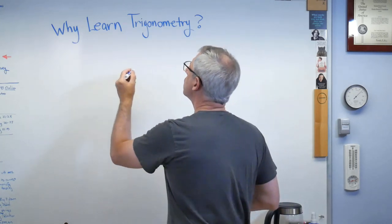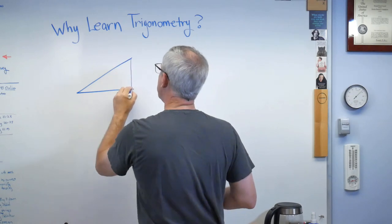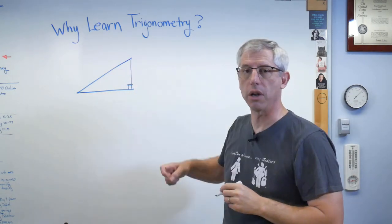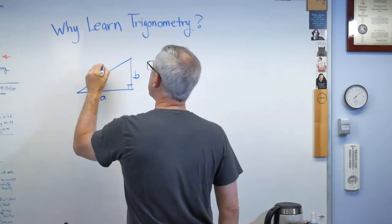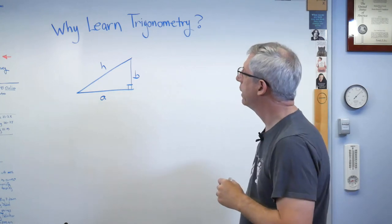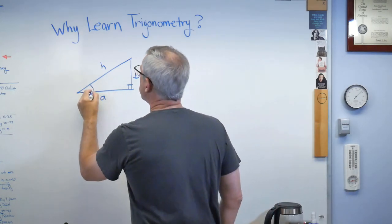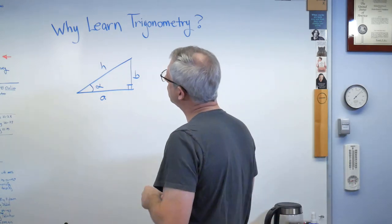And when I say we're describing triangles, here's what it looks like. We're going to describe, actually, usually it's right triangles. Right triangle is one where there's a 90 degree angle there. And we'll call this A, B, and H for hypotenuse. Well, if we have this angle here, we'll call that alpha. Trigonometry starts with relationships between these two.